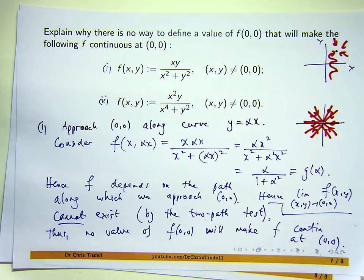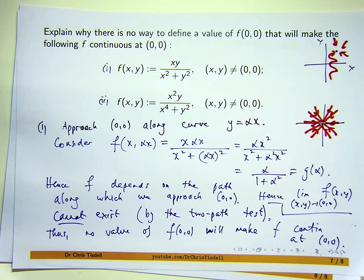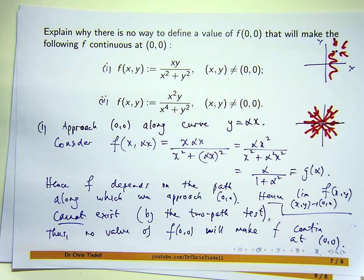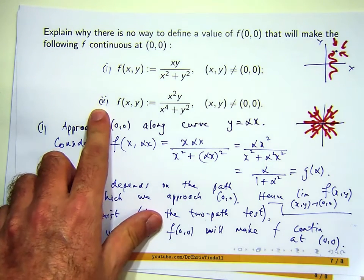There are a couple of important take-home messages. For a limit to exist, it's got to be independent of the path, and always equal along every path towards the point you're approaching. If you can find two paths where the limits differ, then the limit cannot exist. If the limit doesn't exist, you can't make the function continuous. Now, even if we got down here with no alphas, that wouldn't necessarily mean the limit exists — you have to consider every path, not just straight lines. What about parabolas, or other curves? That's why it's far easier to show a limit doesn't exist than to show it does.